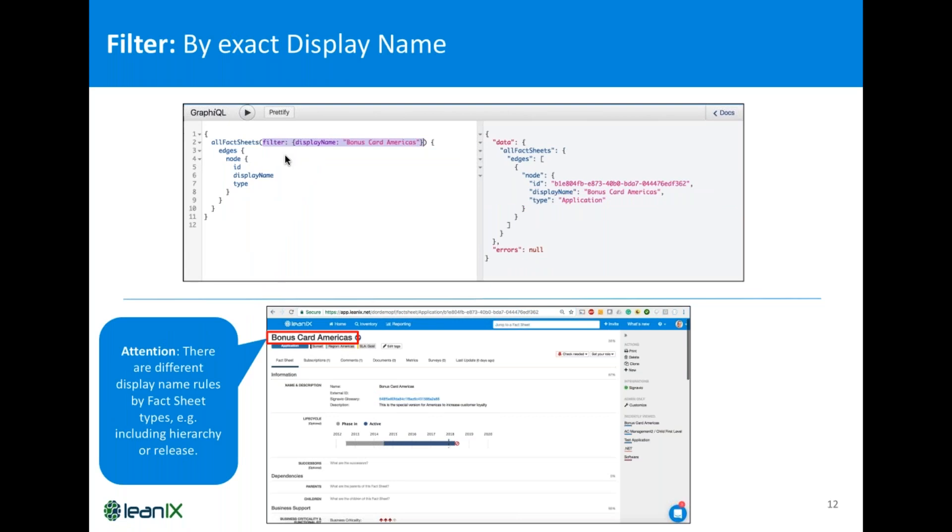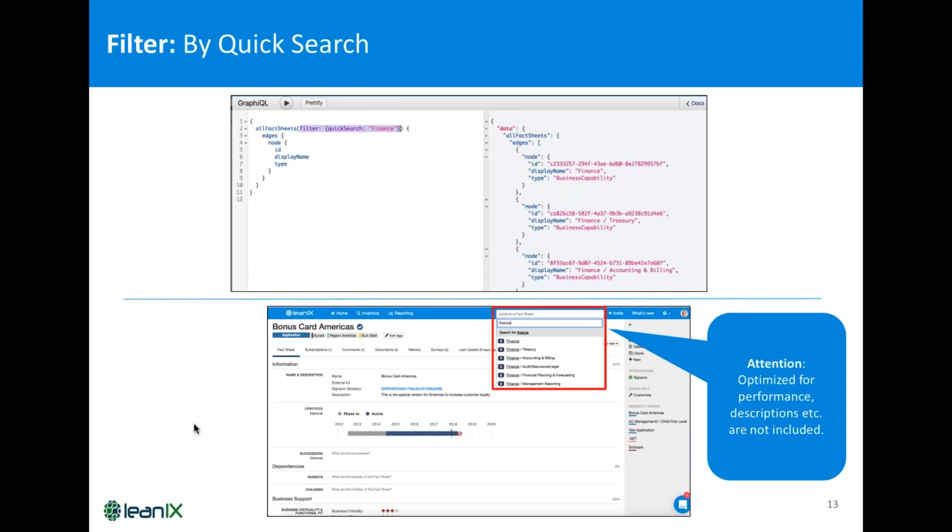Then, also a good approach is to work with exact display name. While it's often convenient to work with an ID because you feel that this is more precise for integrating systems, there are use cases where you have the exact name of the Factsheet and it works as expected. Be aware, however, that there are different ways to generate display names in LeanIX. So, you can have a hierarchy, you can have release in LeanIX and this filter will only return if the exact display name is matched.